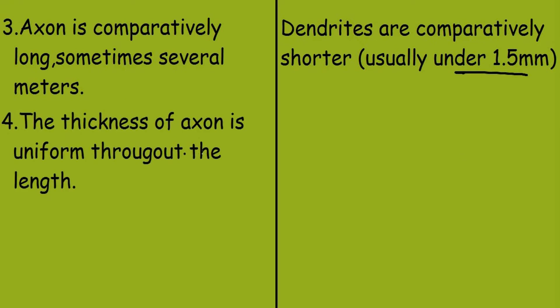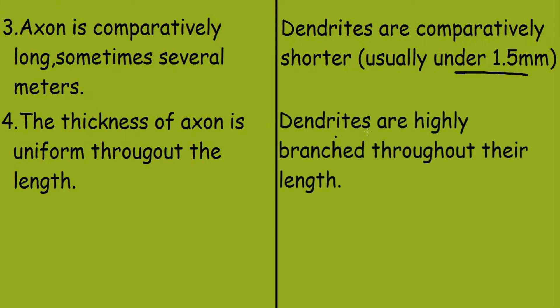The thickness of axon is uniform throughout the length, while dendrites are highly branched throughout their length.